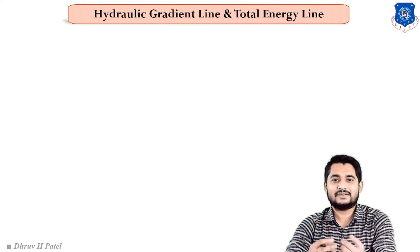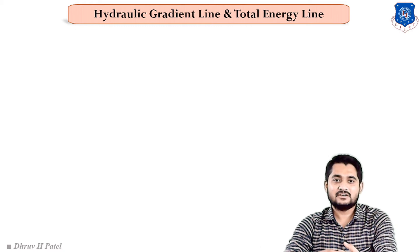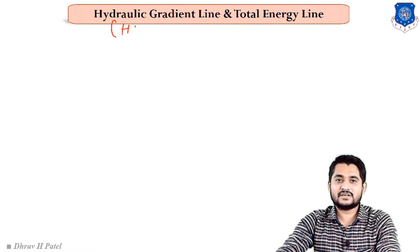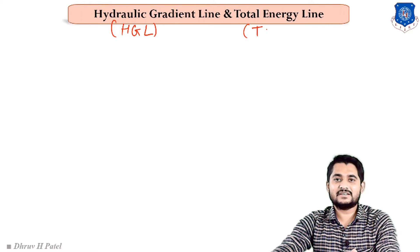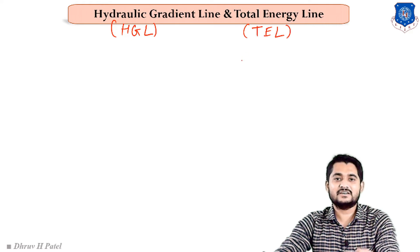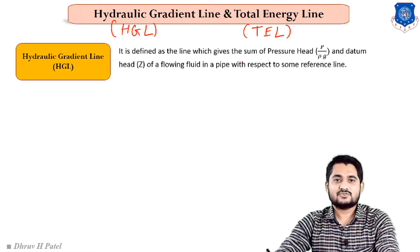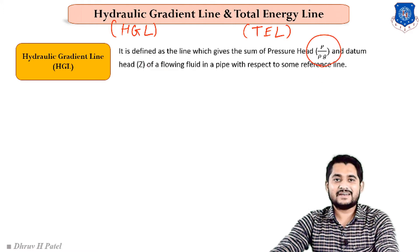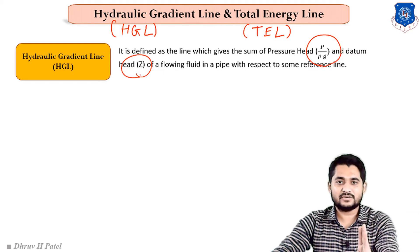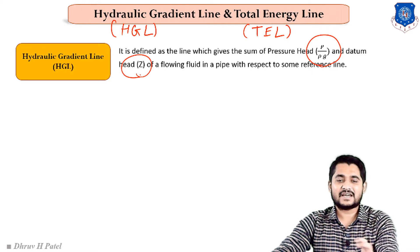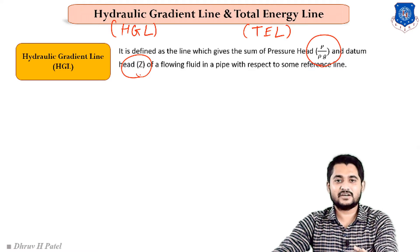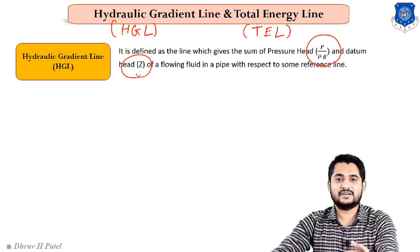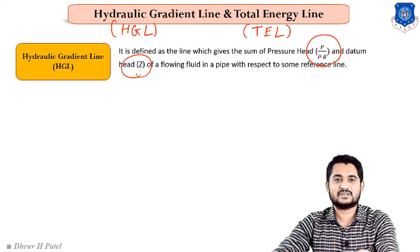Let us first understand the concept of the hydraulic gradient line and total energy line. The hydraulic gradient line is denoted as HGL and total energy line as TEL. The hydraulic gradient line is defined as a line which represents the summation of pressure head P by ρg and datum head z. Generally, there are three types of head: pressure head P by ρg, kinetic head V²/2g, and datum head z.